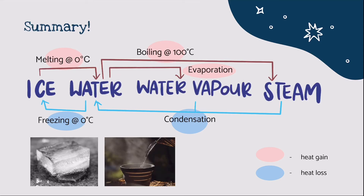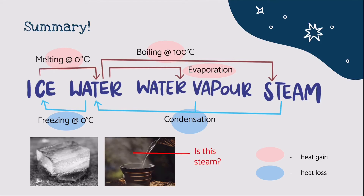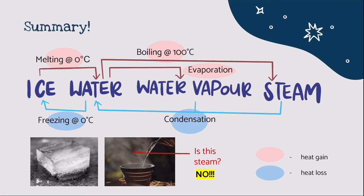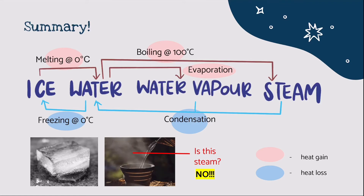Here's a quick question to recap what we have learnt. Is this steam? No. Remember that steam and water vapour cannot be seen by the naked eye. The mist that you see when water is boiling is actually tiny water droplets which are in liquid state, not gaseous state. When water boils, liquid water changes its state to gas — steam. The steam comes into contact with the cooler air surface above it, loses heat to it, and is condensed into tiny water droplets in the form of mist.